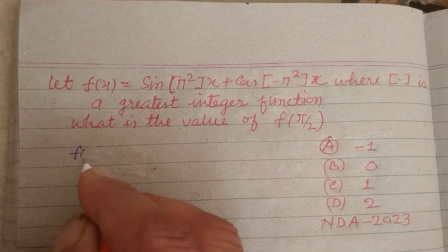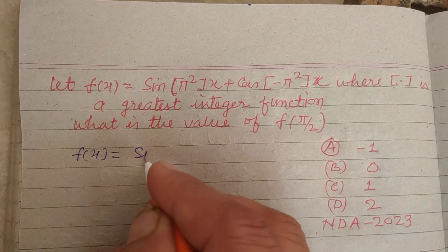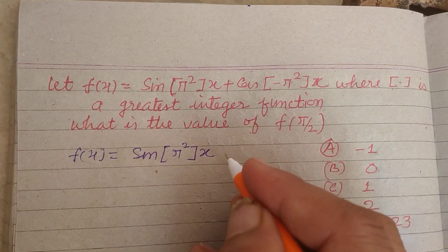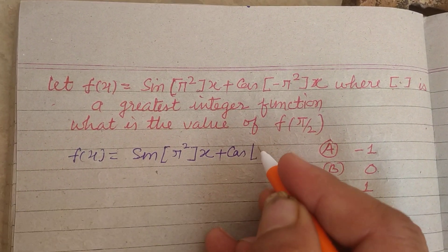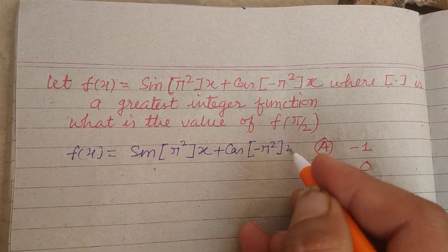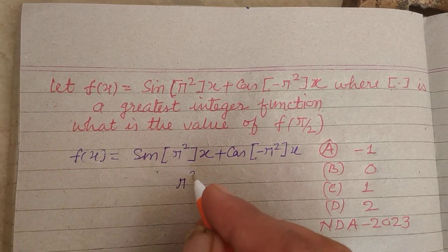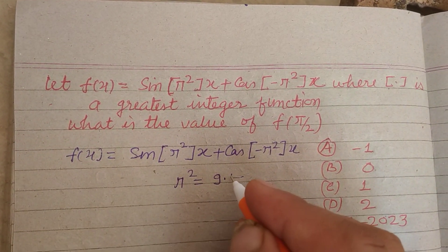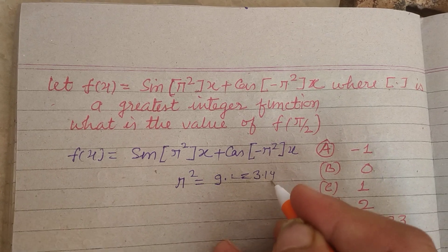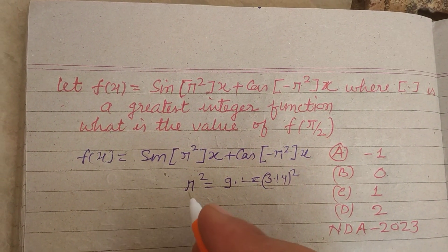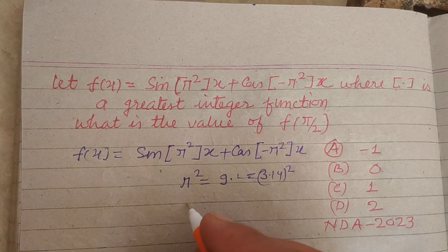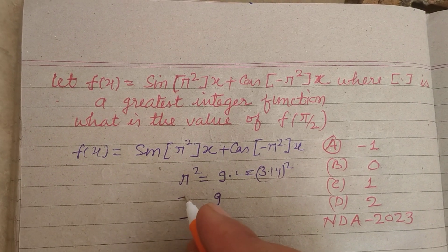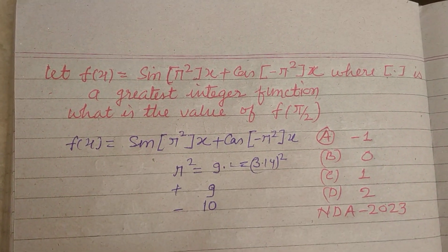So the given function is f(x) = sin(⌊π²⌋ · x) + cos(⌊-π²⌋ · x). Now, π² = 9.something (since π ≈ 3.14). So for the positive value, the greatest integer is 9, and for the negative value, the greatest integer of -π² is -10.